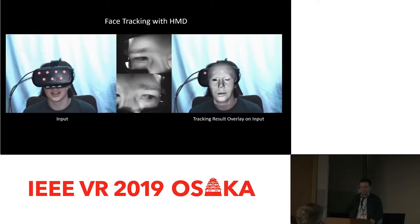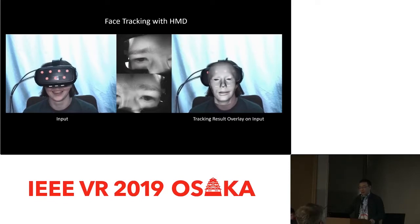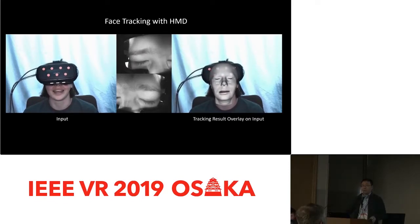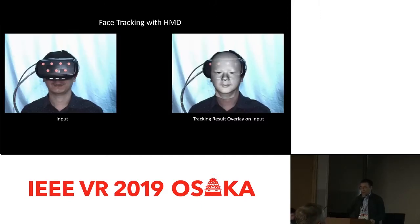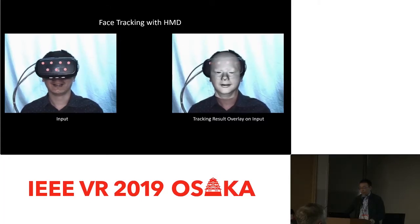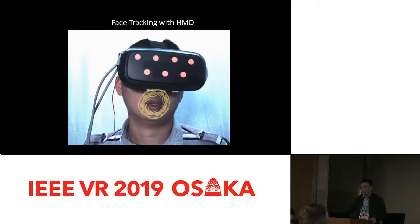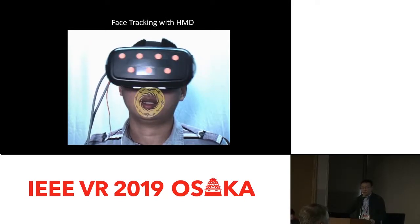Let me show some results of our tracking. On the left side are the inputs — the face camera and the near-infrared camera — and we overlay the deformed, tracked 3D model onto the image. Here is another example. You can see that all of those models are actually personalized. To demonstrate the accuracy of tracking, we put a sticker onto that person's face — you can see it sticks to the face pretty well.